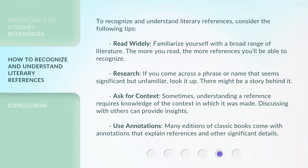To recognize and understand literary references, consider the following tips. Read widely — familiarize yourself with a broad range of literature; the more you read, the more references you'll be able to recognize. Research — if you come across a phrase or name that seems significant but unfamiliar, look it up; there might be a story behind it. Ask for context — sometimes understanding a reference requires knowledge of the context in which it was made, and discussing with others can provide insights. Use annotations — many editions of classic books come with annotations that explain references and other significant details.